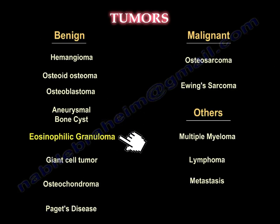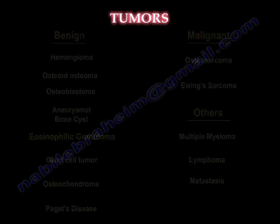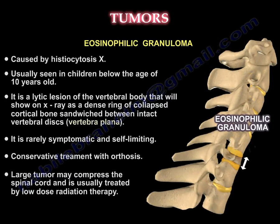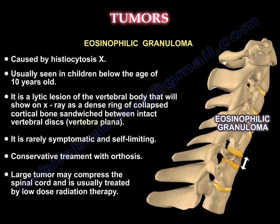Eosinophilic granuloma is caused by histiocytosis X, usually seen in young children below the age of 10. You may see an elliptic lesion of the vertebral body. Sometimes the X-ray shows a dense ring of collapsed cortical bone sandwiched between intact vertebral discs — they call it vertebra plana. It is rarely symptomatic and usually self-limiting.